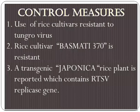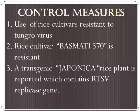Let us see how to control this rice tungro disease. Control measures include use of rice cultivars resistant to tungro disease. Rice cultivar Basmati 370 is a resistant variety. Transgenic varieties are also available; in japonica rice, a plant containing the RTSP replicase gene in its structure is reported. We should use these types of controlling measures to avoid the disease loss. Thank you for listening.